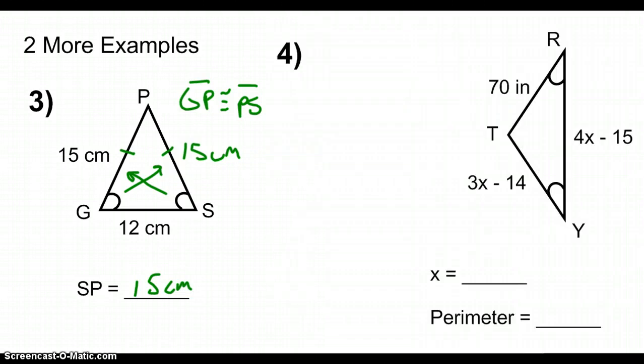Looking at example 4, we have triangle TRY, where angle R and angle Y are congruent. So using the converse of the isosceles triangle theorem, we know that leg TR and leg TY are going to be congruent. So segment TR is congruent to segment TY by the converse of the isosceles triangle theorem.